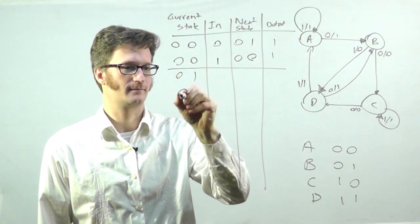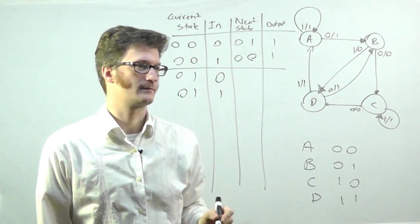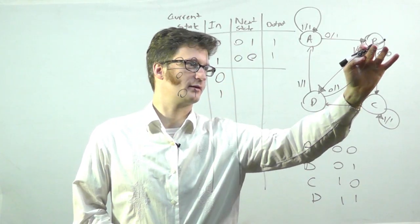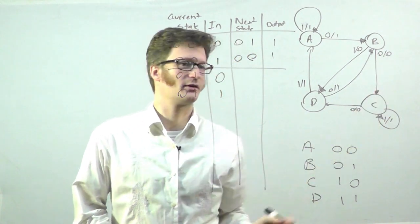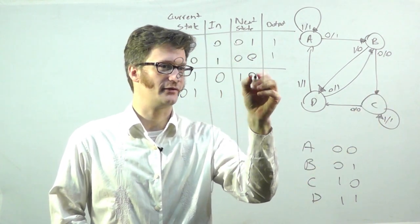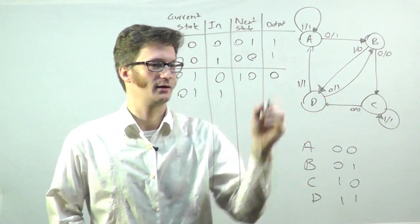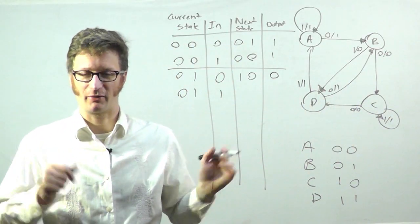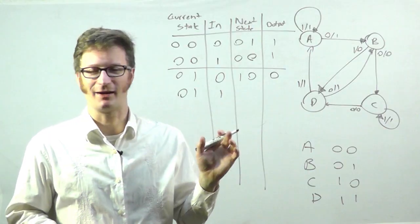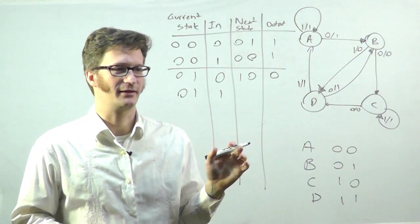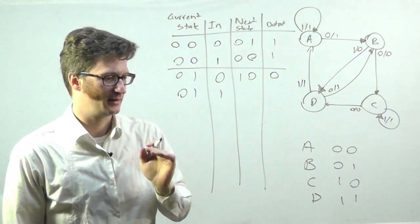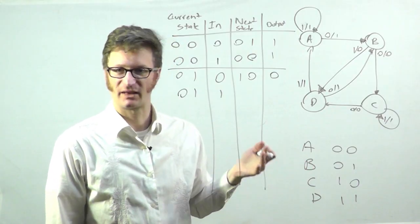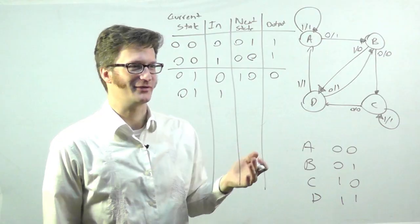And then, going with state B, if my input is 0, I go to state C, which is 1, 0, and my output is 0. And, bear with me, I think I maybe am going to speed it up at this point, because it's pretty boring to watch me work my way through it. But, I will stop speeding up in just a second.